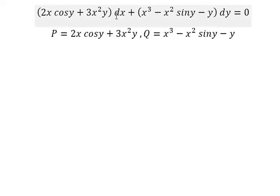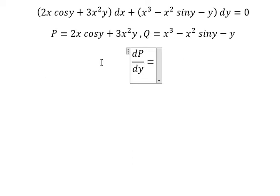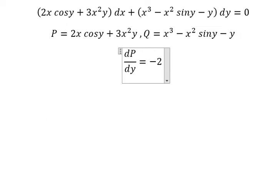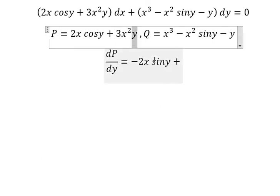We have dx, that means we need to do the first derivative of P with respect to y. So the first derivative of cos y gives us negative sin y, and this one we have 3x².